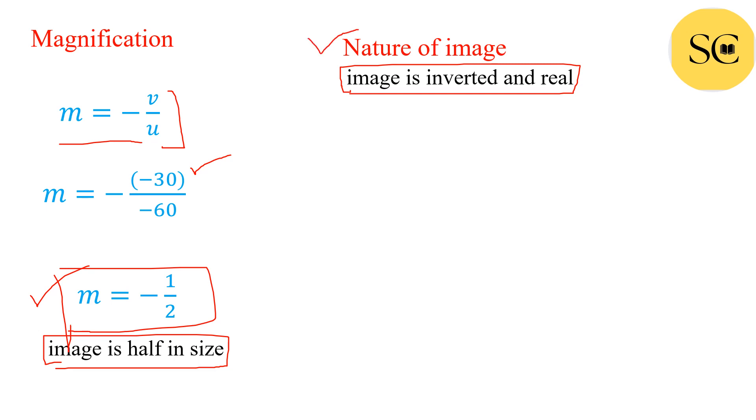To find the nature of image there is no formula. We can find the nature of image on the basis of magnification and the image distance. When the values of image distance and magnification are negative then the image is always inverted and real.